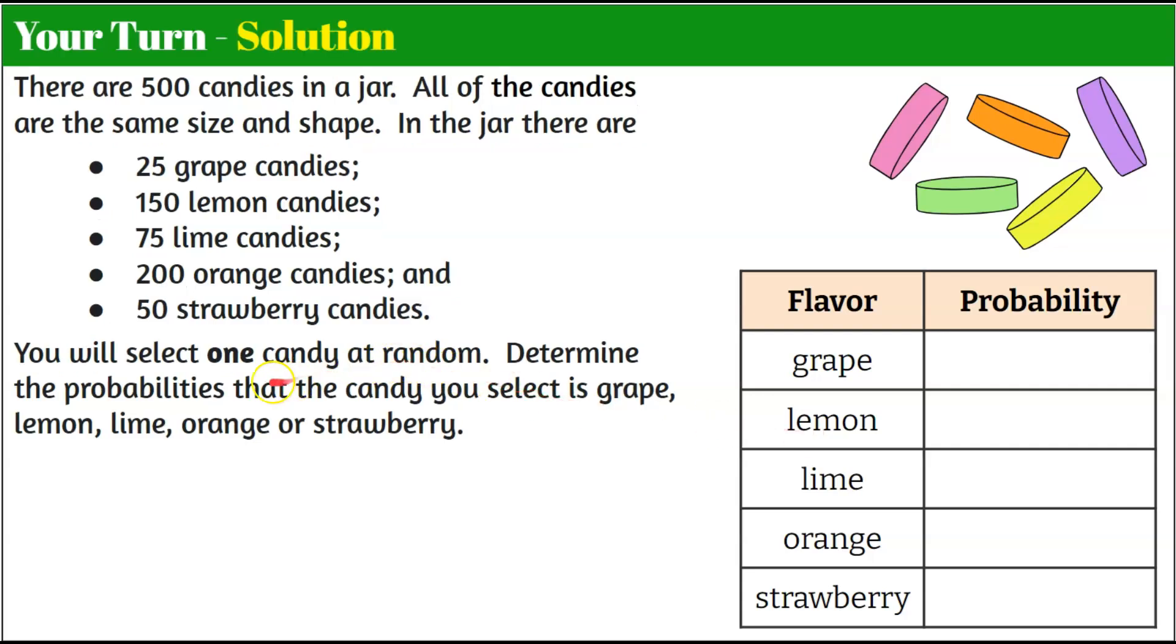Welcome back. Here's our solution. We want to know, selecting one random from a jar of 500, what are the probable outcomes for each flavor of candy? Let's start with the grape. We know that we have 25 grape candies in a jar of 500. I'm going to use my calculator. 25 divided by 500 and write our grape probability as a decimal. Five hundredths or 0.05. So seeing as this is to two decimal places, I'm going to write all of my probable outcomes as a decimal to two decimal places.